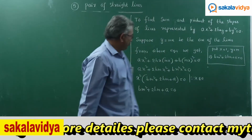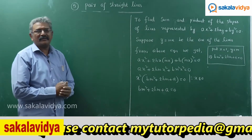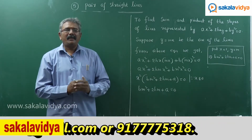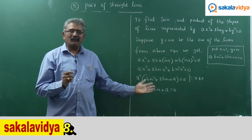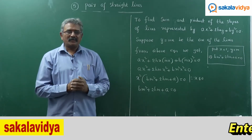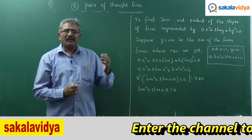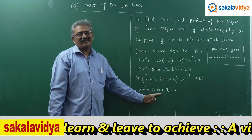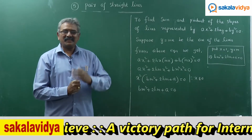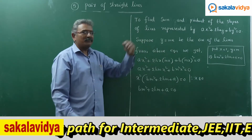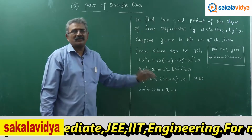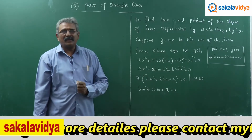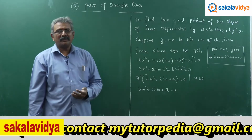The equation bm² + 2hm + a = 0 represents a quadratic equation in m. Being a quadratic equation, it possesses two roots — let us say m1 and m2 — where m1 is the slope of the first line and m2 is the slope of the second line. The sum of the slopes equals the sum of the roots, and the product of the slopes equals the product of the roots of this quadratic equation.